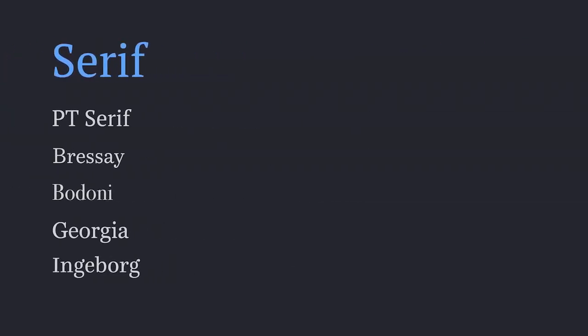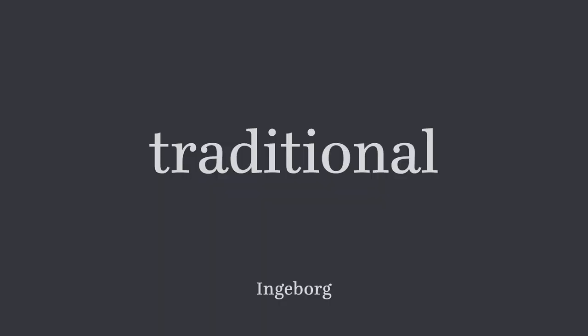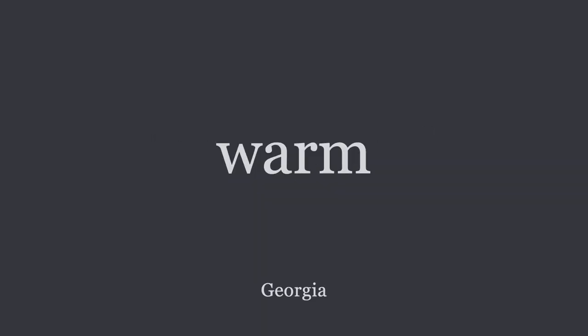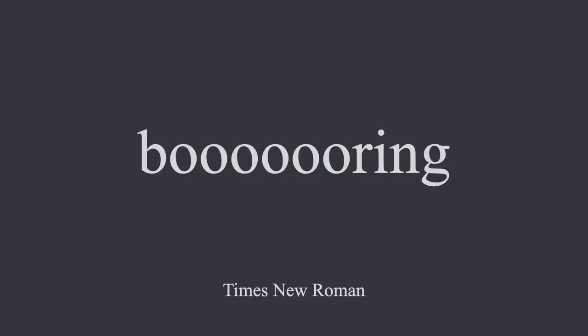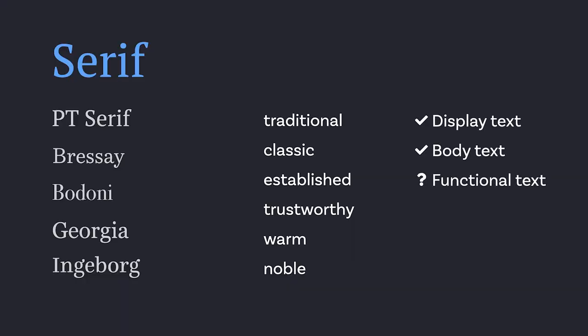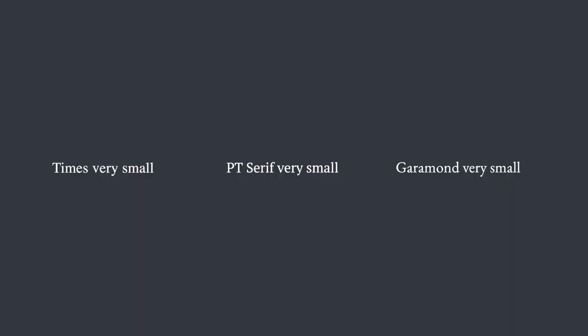Moving on to serifs. Popular examples here might be Georgia or Times New Roman. They are perceived as very traditional, classical, established, and trustworthy — but also warm and noble. It depends on how you see it and what fits your project. Maybe it's also old-styled or dusty. You can use these typefaces for display text, body text, and functional text, though it might get a bit clunky in smaller sizes.